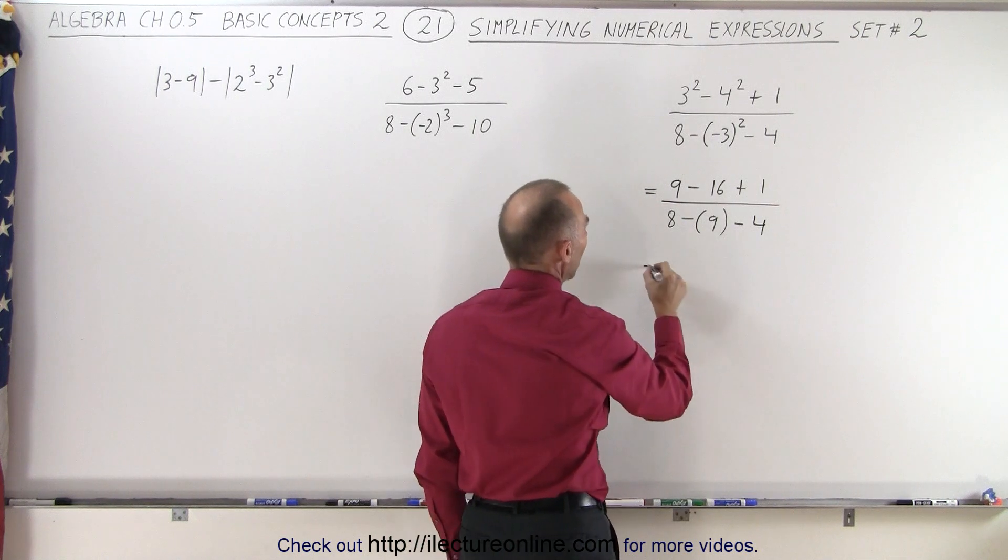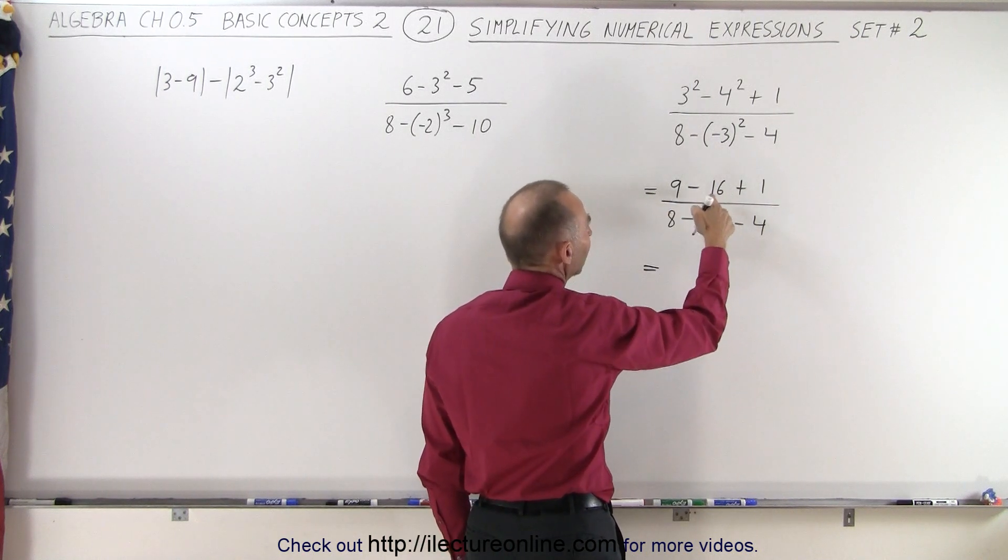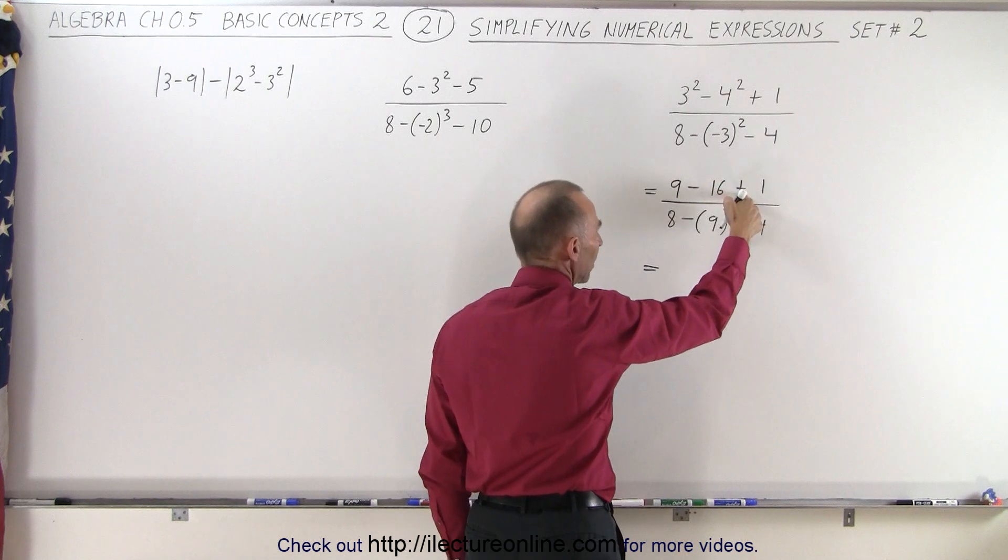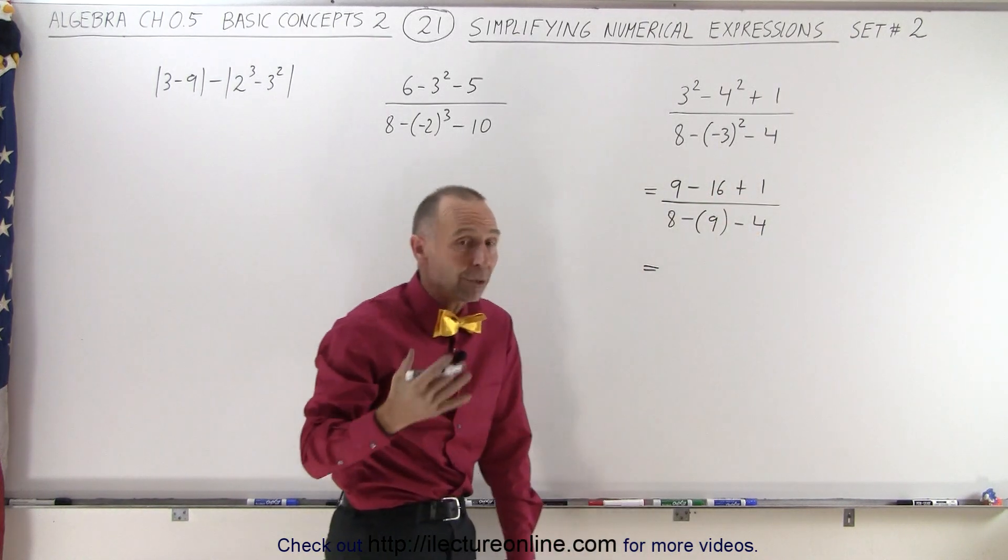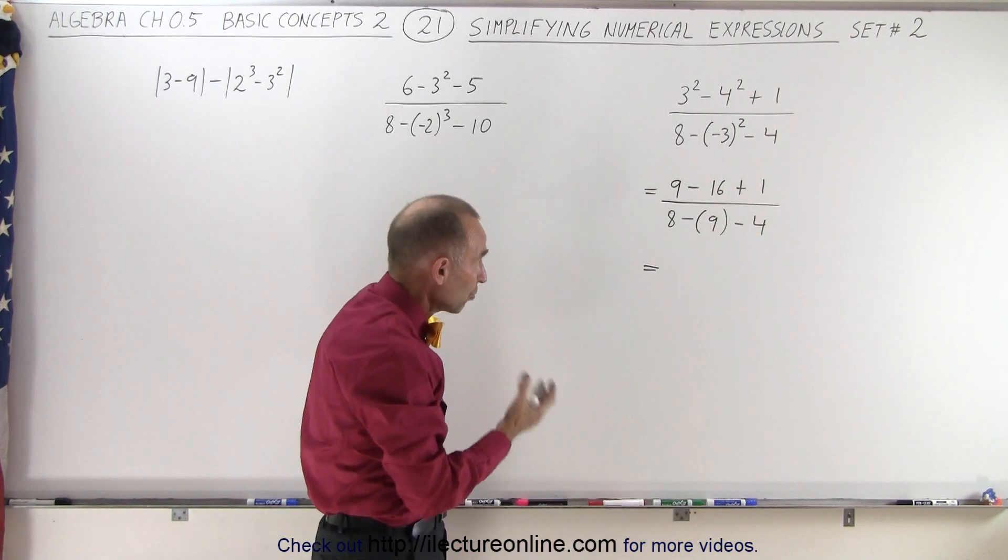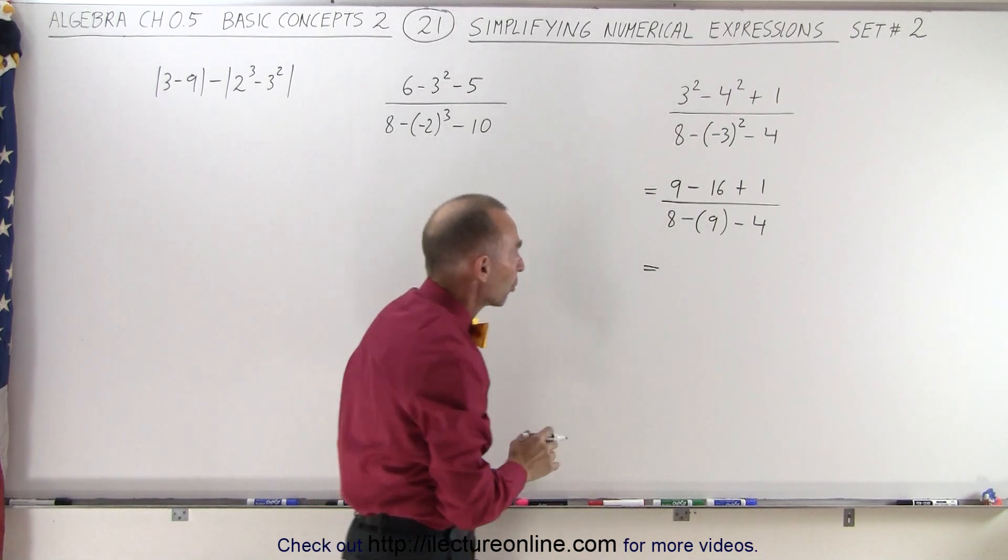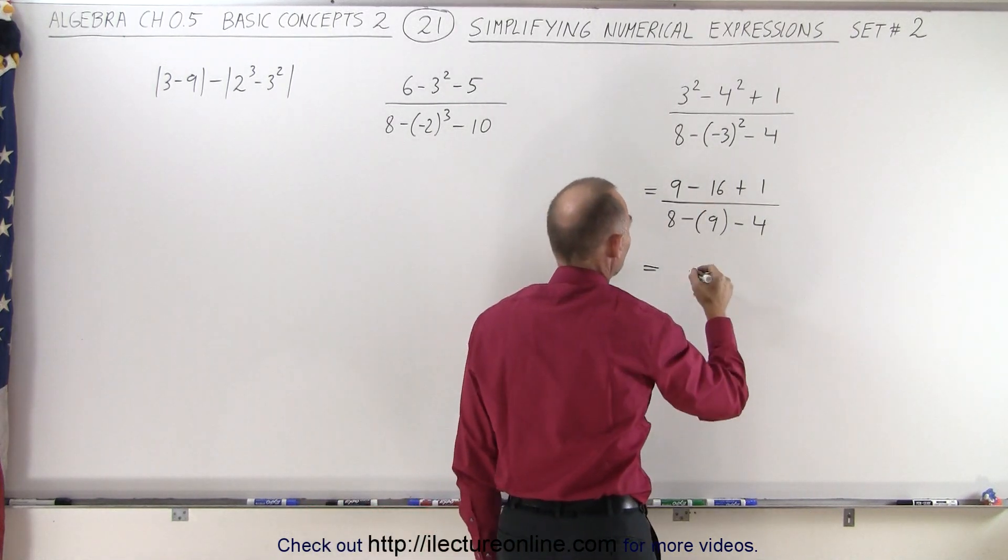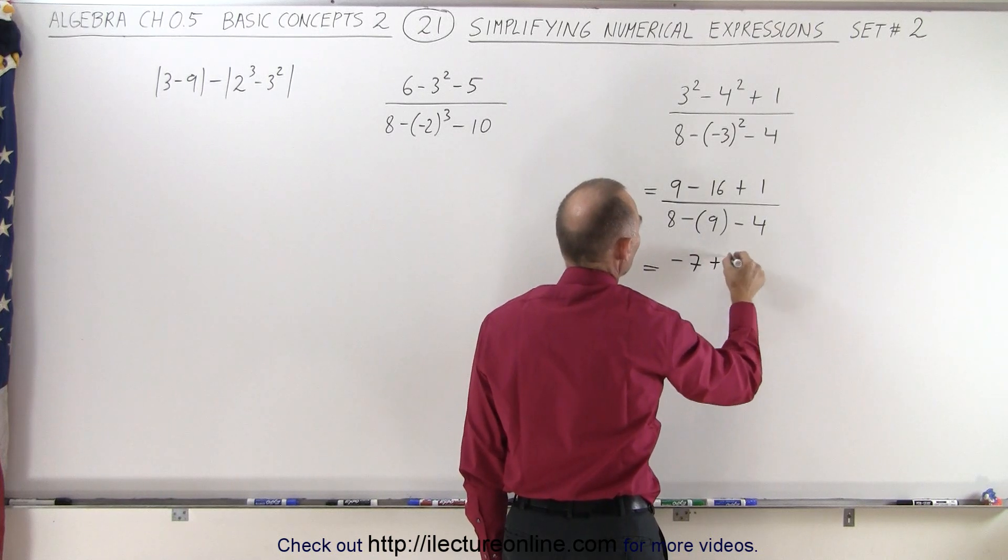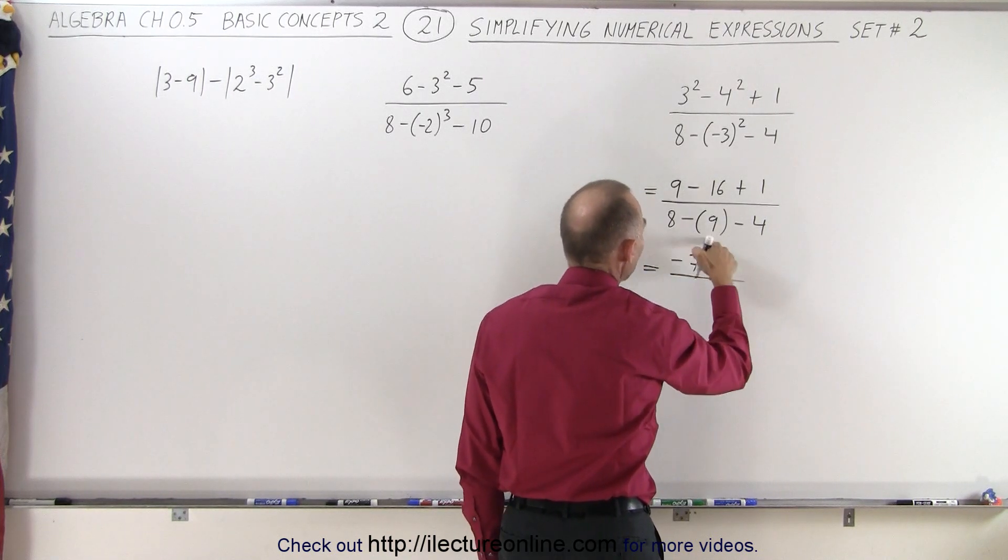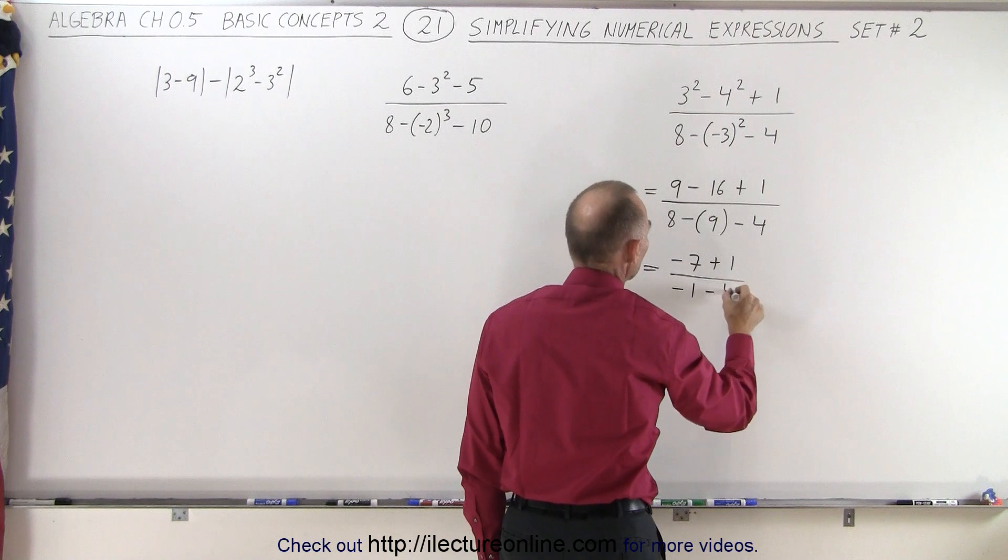All right, now we can simplify the numerator. Again, we do the first operation first, the second operation second, because they have equal priority. Subtractions and additions have equal importance, but we start from left and work towards the right. So 9 minus 16 is minus 7, plus 1, divided by 8 minus 9 is minus 1, minus 4.